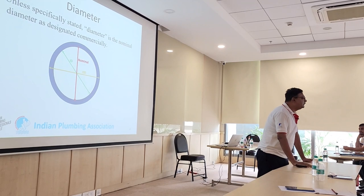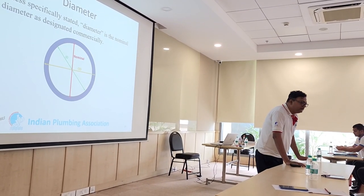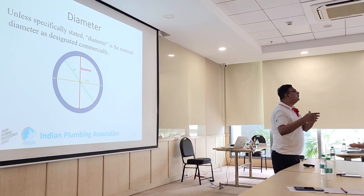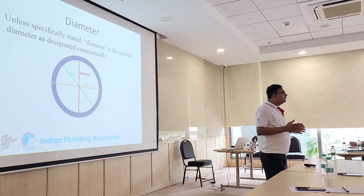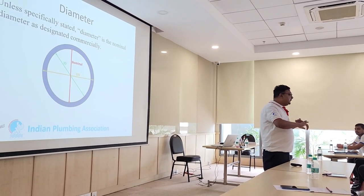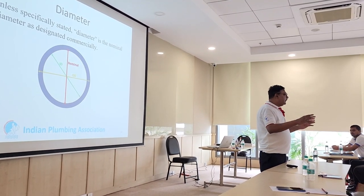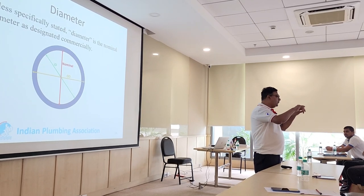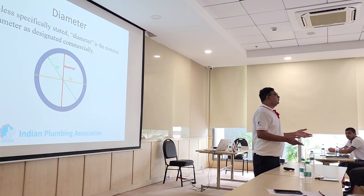Why should contractors use the outer diameter? Because it gives the space — whether things will fit or will not fit. The contractor is least bothered about your internal diameter; he is bothered about what material you have suggested — GI, CI, PVC, glass, anything — and the manufacturer's outer diameter, to determine if he can fit the pipe or not.